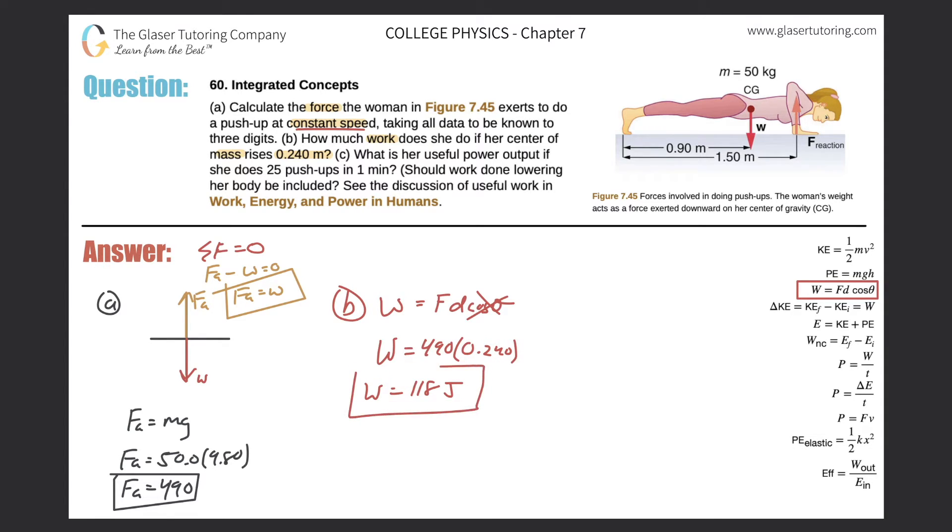All right, there we go. Letter C. So letter C now is saying what is her useful power output if she does 25 push-ups in one minute, and then it says should work done lowering her body be included? So I believe so. If you think about this, let's say she's lowering her body. I know she's going with gravity, but let's assume that there is no acceleration.